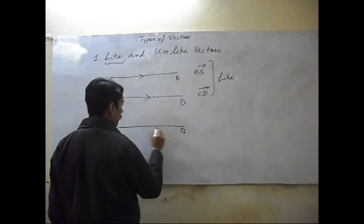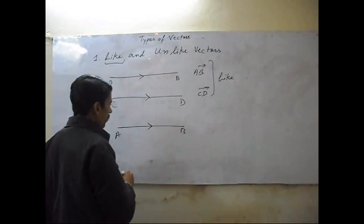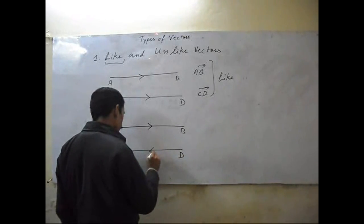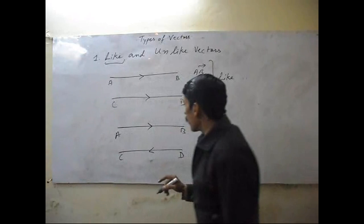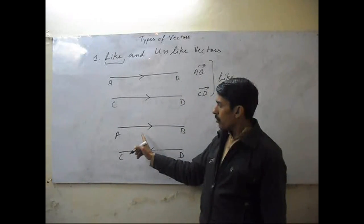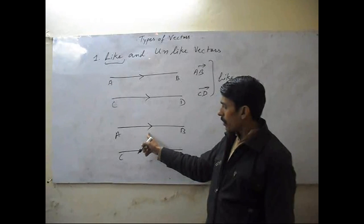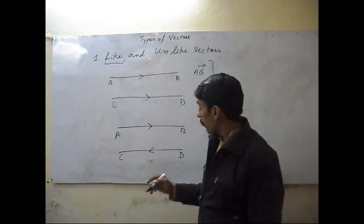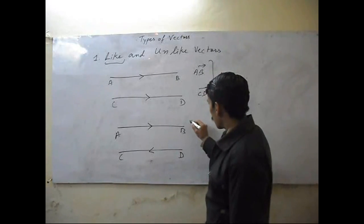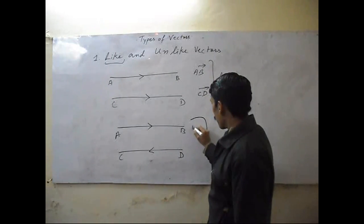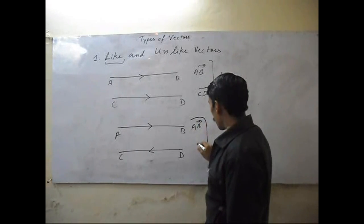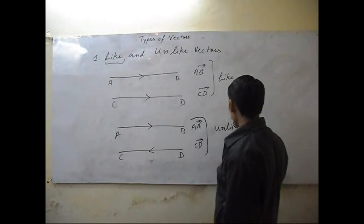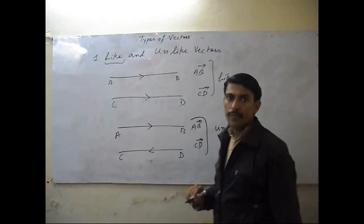Second, unlike vectors: if the direction of the first vector is just opposite to the direction of the second vector, then vectors AB and CD will be unlike vectors.